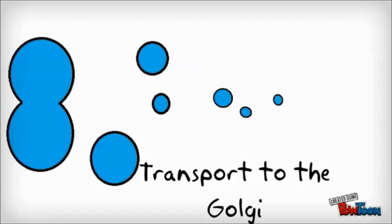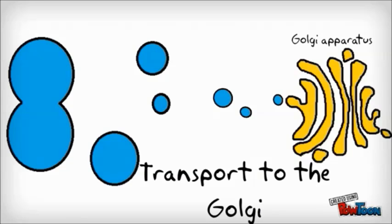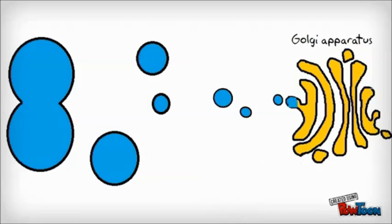These vesicles from the vesicular tubular clusters travel quickly along microtubules to the Golgi apparatus, where they fuse with the cis-face of the Golgi, delivering their contents.